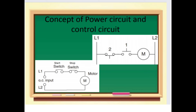A power circuit is defined as any circuit used to carry electricity that operates a load. Most lighting and receptacle outlet circuits in a house are power circuits, since they only provide power to devices when the device operates. The circuit control is a part of the power circuit.